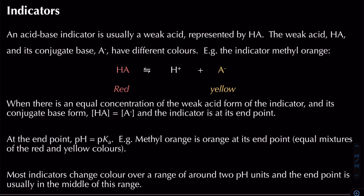In this video we're going to be looking at indicators and pH curves. An acid-base indicator is usually a weak acid, represented by HA. The weak acid HA and its conjugate base actually have different colours. For example, methyl orange has an acid form that is red and a conjugate base form that is yellow.